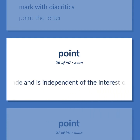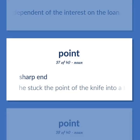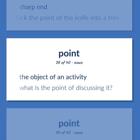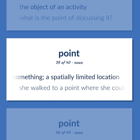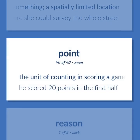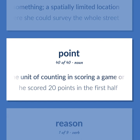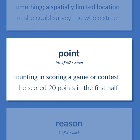Sharp end — he stuck the point of the knife into a tree. The object of an activity — what is the point of discussing it? The precise location of something; a spatially limited location — she walked to a point where she could survey the whole street. The unit of counting in scoring a game or contest — he scored 20 points in the first half.